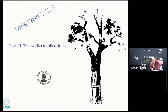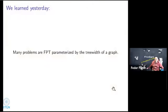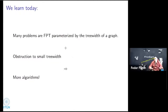This is the continuation of treewidth lectures. What we learned yesterday about treewidth — the most important message was that many problems which are intractable in general graphs are fixed-parameter tractable parameterized by the treewidth of a graph. What we will learn today is that if we apply what we learned yesterday, abstractions to small treewidth will imply more interesting algorithmic results.